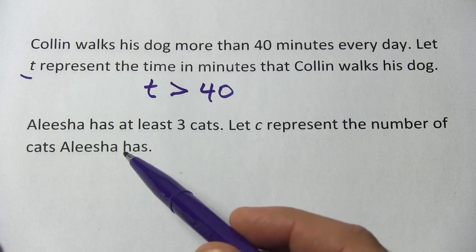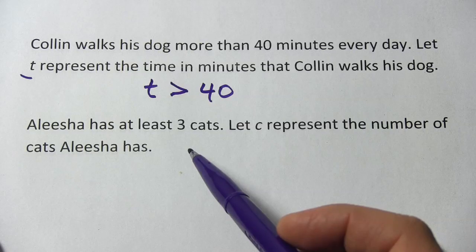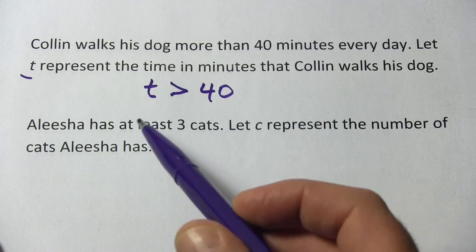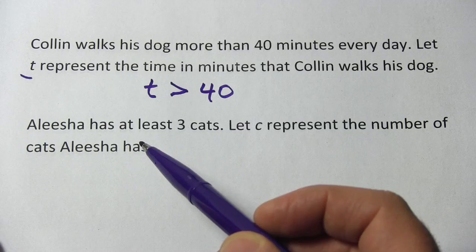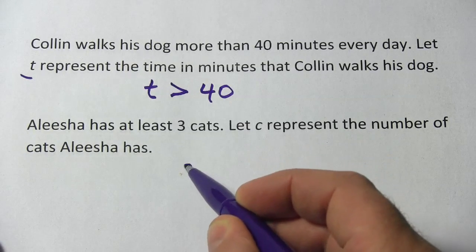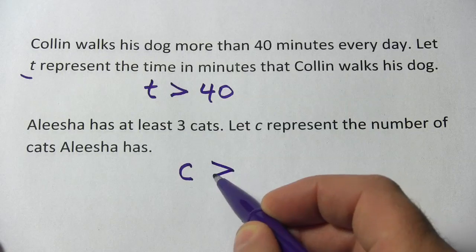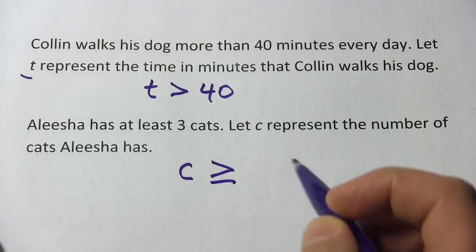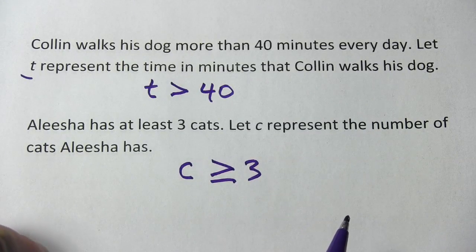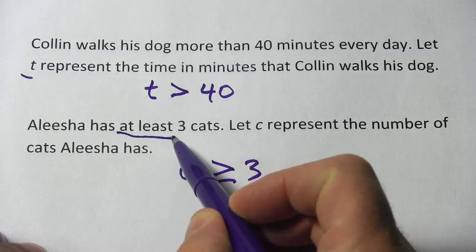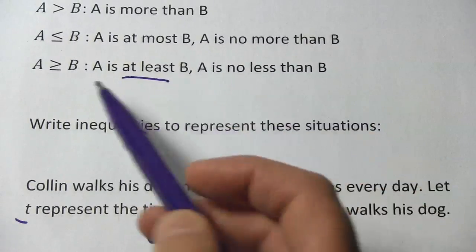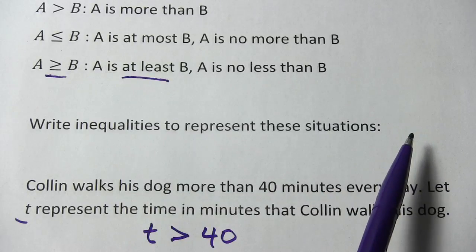The next one says: Alicia has at least three cats. Let C represent the number of cats Alicia has. So if she has at least three, that means she could have three or she could have more. So the number of cats is going to be greater than or equal to three. If you weren't sure about that, you could have seen the phrase 'at least,' gone back to the chart, and found that it means greater than or equal to.